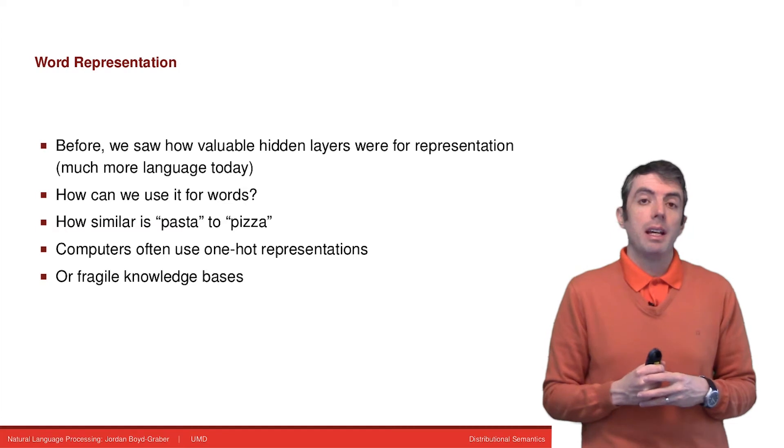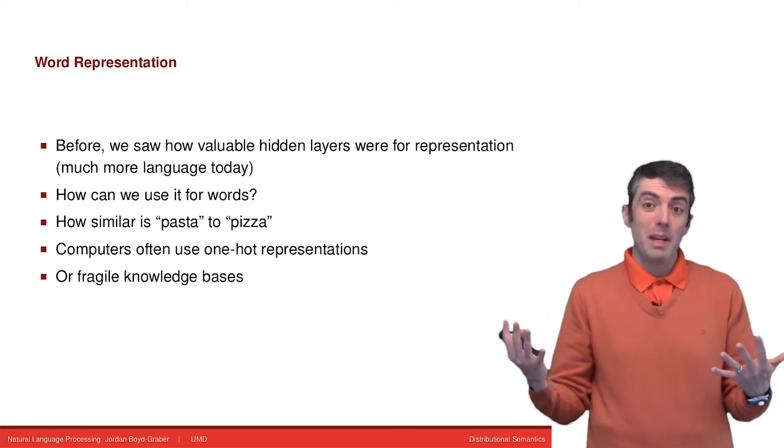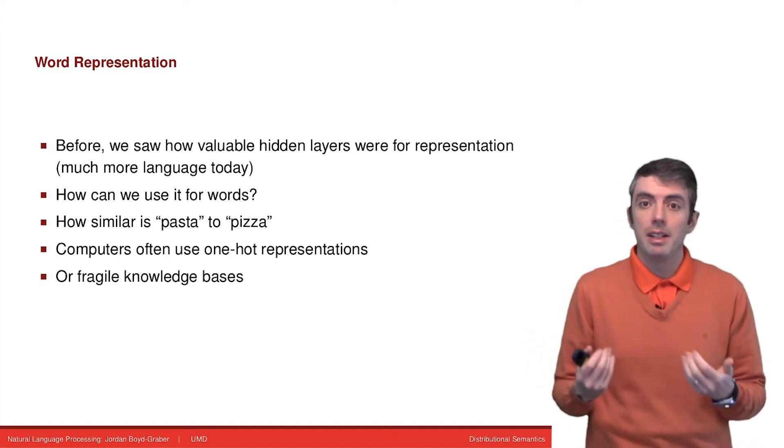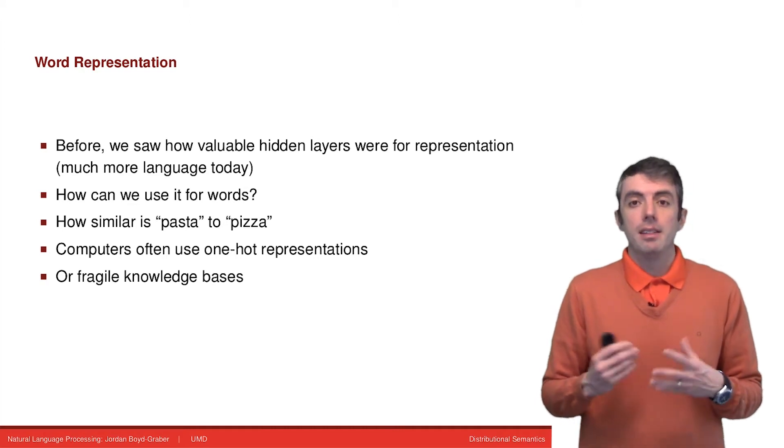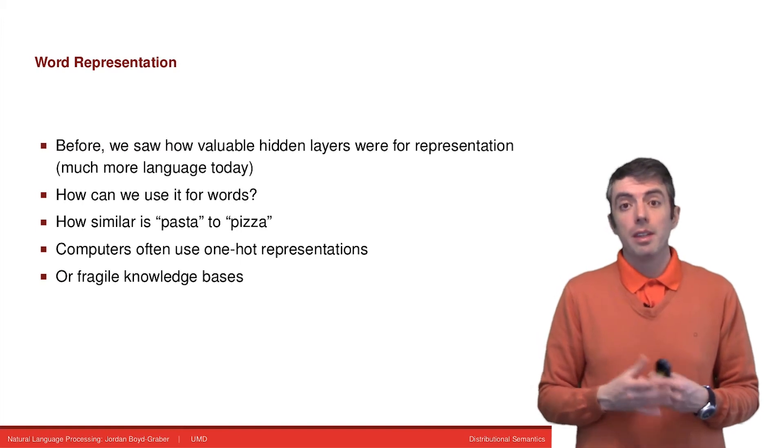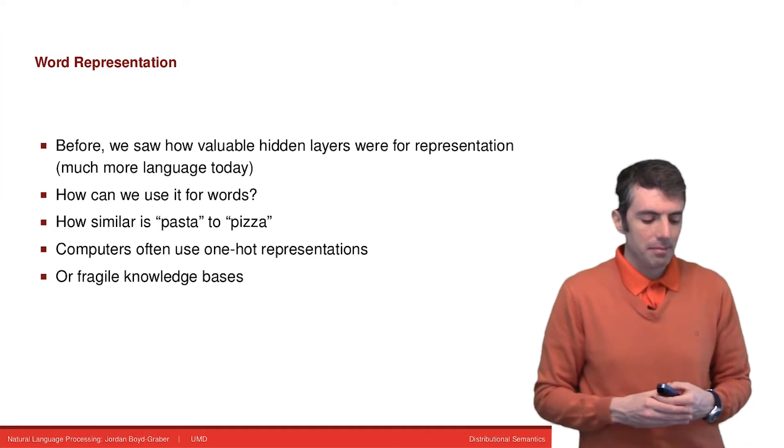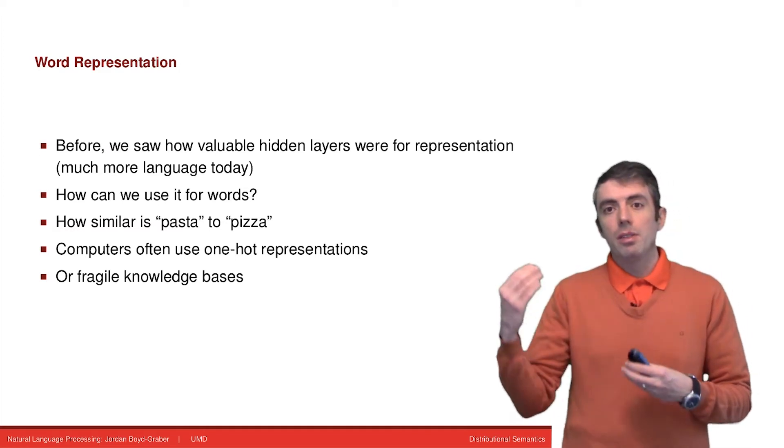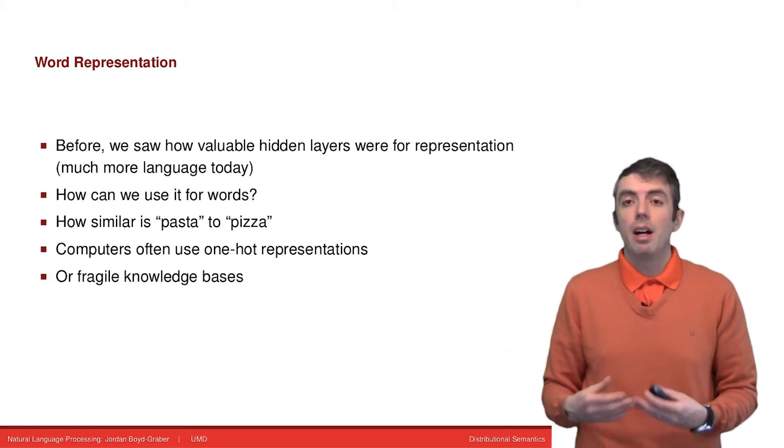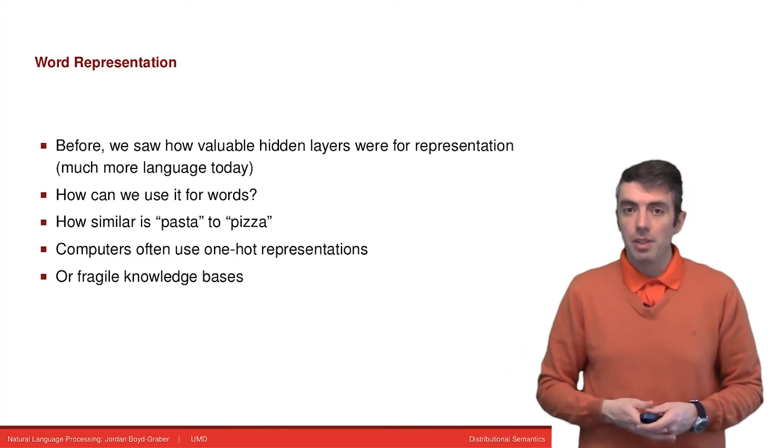If we had a representation for language that allowed us to represent words based on their meaning, we could be able to answer questions like how similar is pizza to pasta? Today we're going to talk about ways that we can answer these questions. These questions will be quite useful for things we'll be doing later and applications like question answering. To justify this, we'll start off by comparing why you might want to do this in contrast to things like one-hot representations or using fragile knowledge bases.